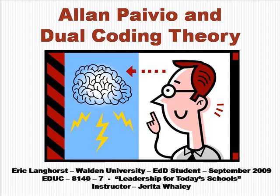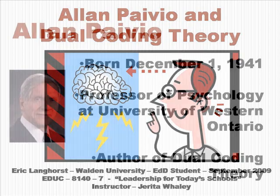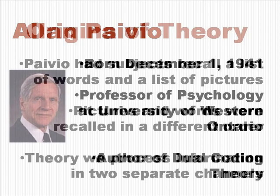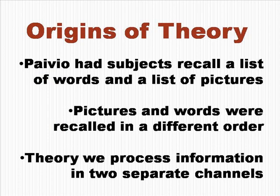Let's start talking about the author of this theory, Alan Paivio. He was born in 1941. He's a professor of psychology at the University of Western Ontario, and he is known as the author of the Dual Coding Theory and has over 200 articles published on this topic and related topics.